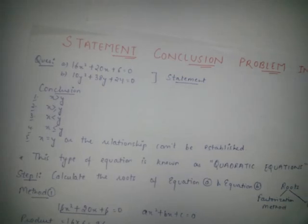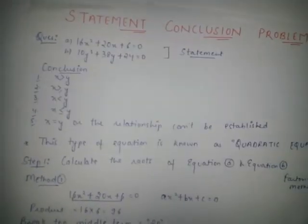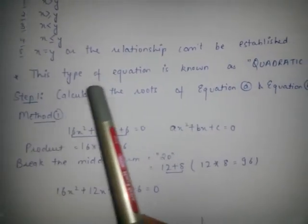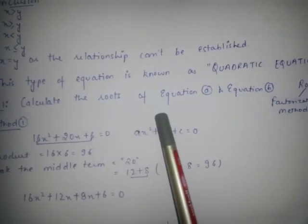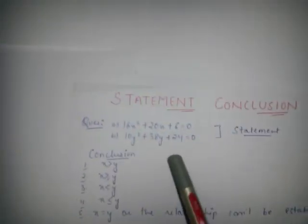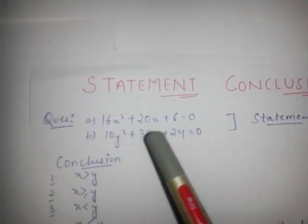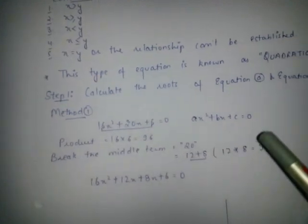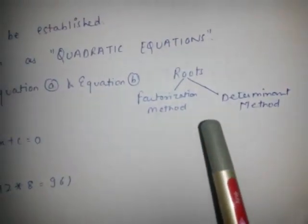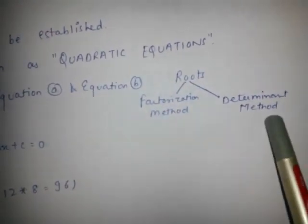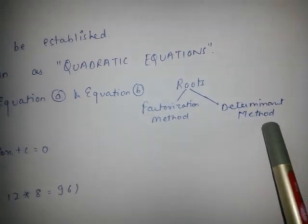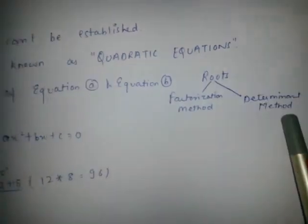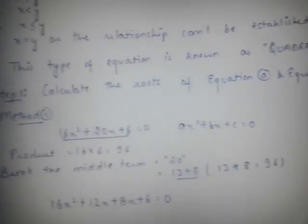Let's see how to solve this type of question. Step 1: calculate the roots of equation A and B — these are two equations. Roots can be calculated by two methods: the factorization method and the determinant method. Let's discuss the first method.